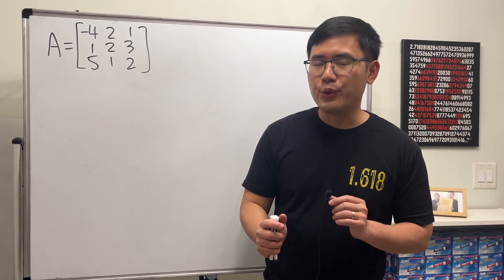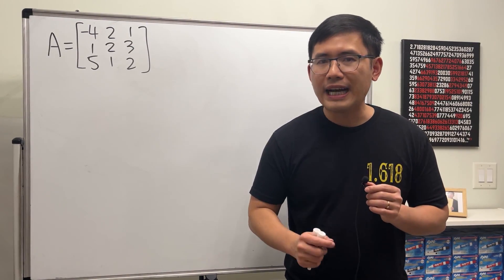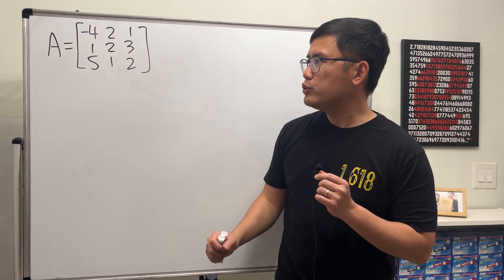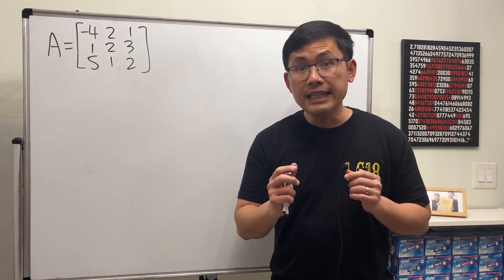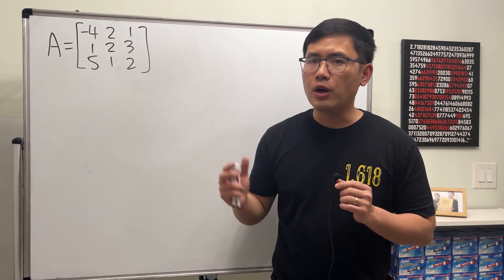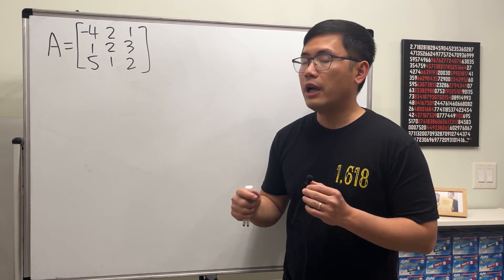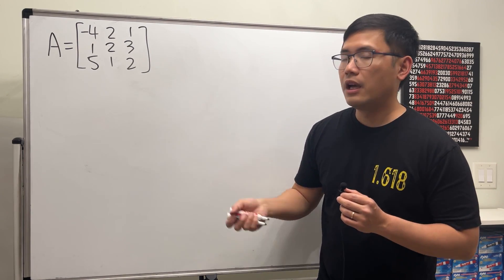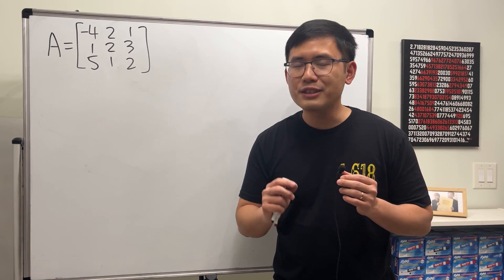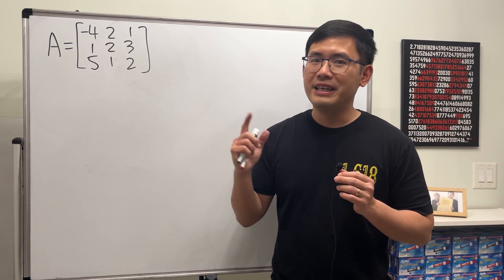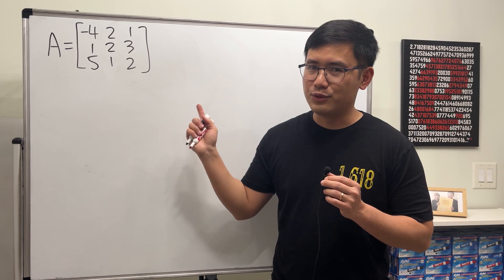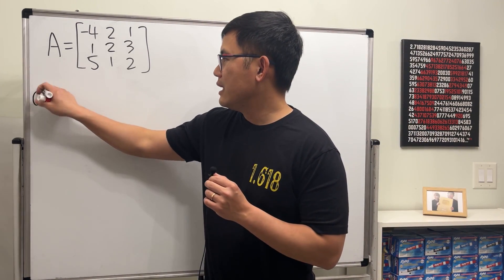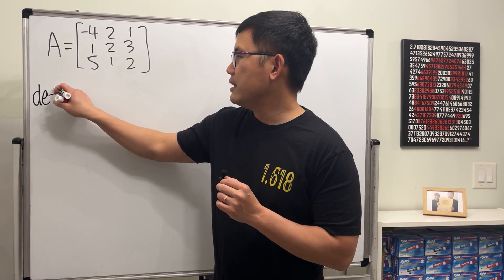In this video I want to show you the shortcut of finding the determinant of a 3x3 matrix. If the determinant of this matrix is not zero, that means it has an inverse, so I will also show you the shortcut of finding the inverse of this 3x3 matrix. Let's find the determinant first.